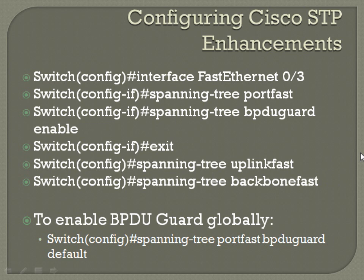For configuring Cisco enhancements to STP — note that when running Rapid Spanning Tree, these changes are already included, so you only need to configure them if you're running a pure STP switching network. To configure PortFast, enter the interface, for example interface FastEthernet 0/3, and use the command 'spanning-tree portfast'. To add BPDU Guard on that port, use 'spanning-tree bpduguard enable'. Exit out of the interface. PortFast and BPDU Guard are configured per port. UplinkFast and BackboneFast pertain to the entire switch and are configured from global configuration mode using 'spanning-tree uplinkfast' and 'spanning-tree backbonefast'. Simple as that.